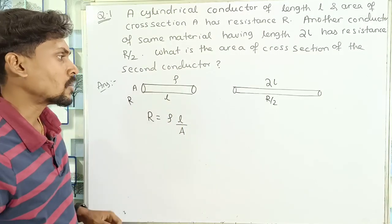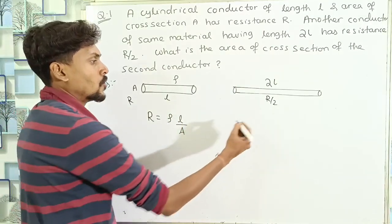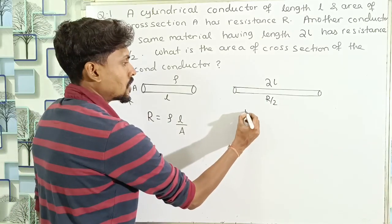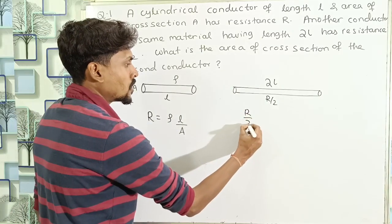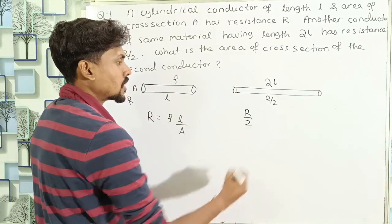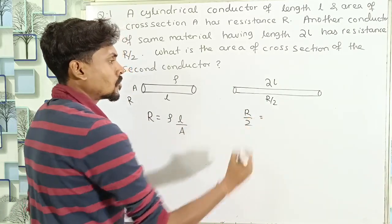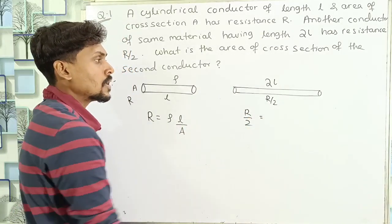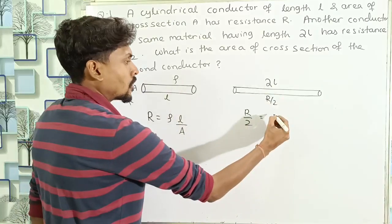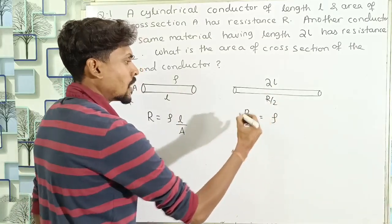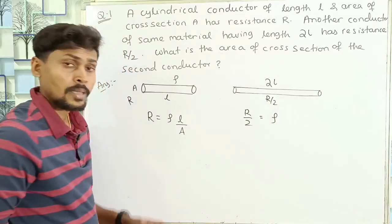For the second conductor, the resistance is R by 2. The length is 2L and the area of cross section is A dash (unknown). So we write: R/2 = ρ × 2L / A dash.